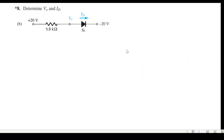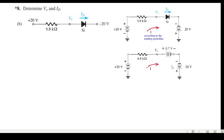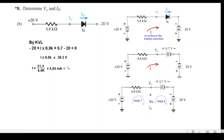For the next part, we draw the two batteries clearly. We can see that the positive terminal is touching the positive of the diode and the negative is touching the negative, so both batteries make this diode forward biased. We replace the diode with its 0.7V equivalent. Writing KVL: minus 20, plus i times 6.8kΩ, plus 0.7, minus 20. Solving gives i equal to 4.84 milliamps, which is the diode current ID.